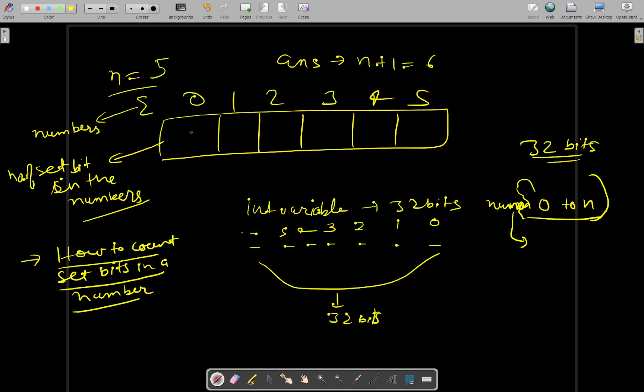So for each number, you can count the number of set bits and put it here. For example, number of set bits in 0 will be 0, 1 will be 1, 2 will also be 1, 3 will be 2, 4 will be 1, and 5 will be 2. These are the number of set bits. So this is how you will be calculating.